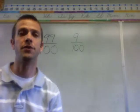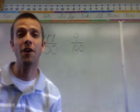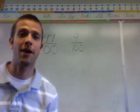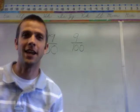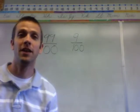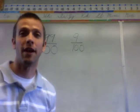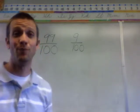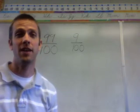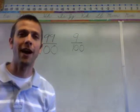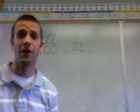Up here on the board I have two fractions, and you'll notice that they both have a denominator of 100. Whenever you have a fraction over 100, it's really easy to name a part as a percent. We've done this before: 99 out of 100 would be 99%, and 9 out of 100 would be 9% — very big difference. Changing a fraction into a percent is super easy if you have 100 on the bottom.